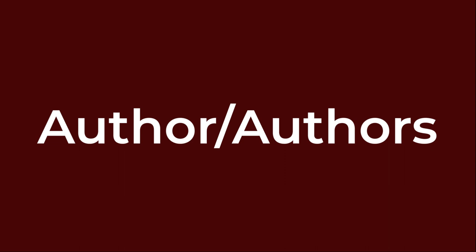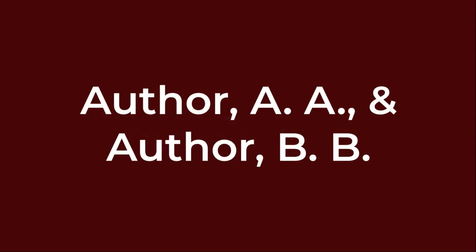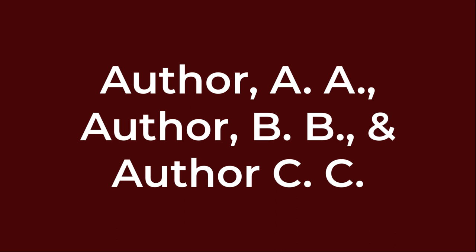Author/authors. For a single author, list the last name first, followed by a comma, then the first initial and middle initial if available. For two authors, list by their last names and initials. Separate author names with a comma and use the ampersand instead of 'and.' Provide surnames and initials in this way for up to and including 20 authors. When there are 2 to 20 authors, use an ampersand before the final author's name.